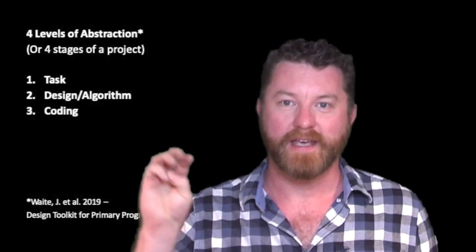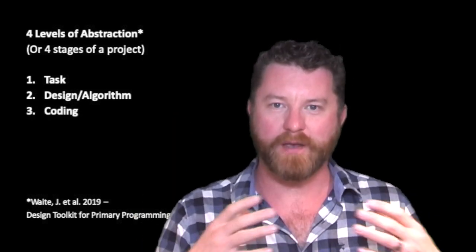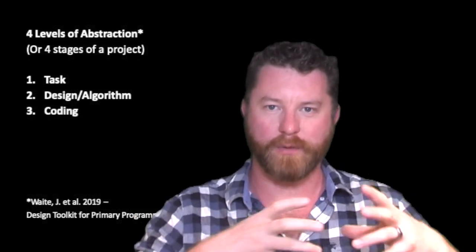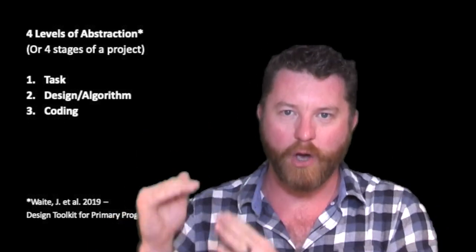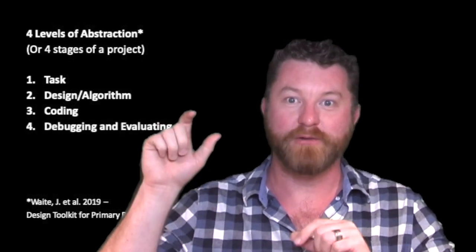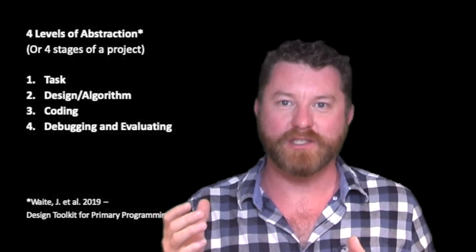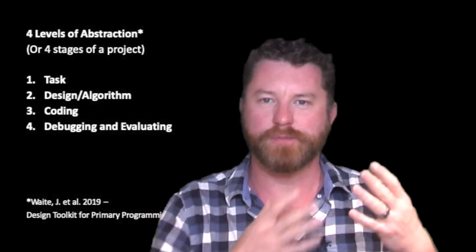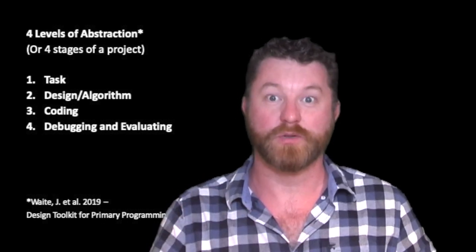Stage three is coding, where we become a programmer. We take our algorithm and our design and we start to code it onto a computer. Stage four is where we run the code, and this is where we can talk about whether we think anything should be improved, or whether we've got any bugs that we need to debug and sort out.